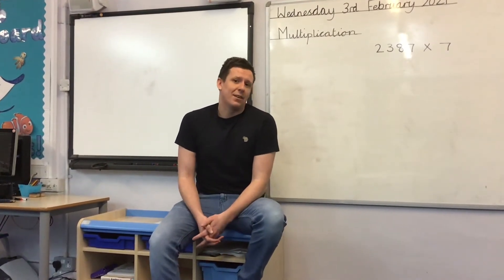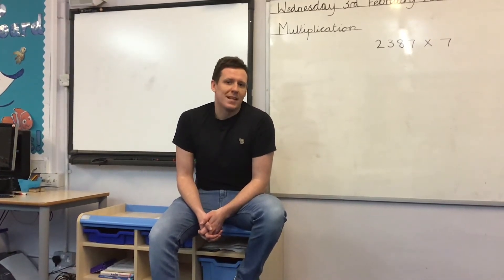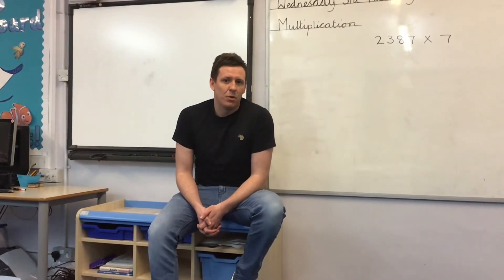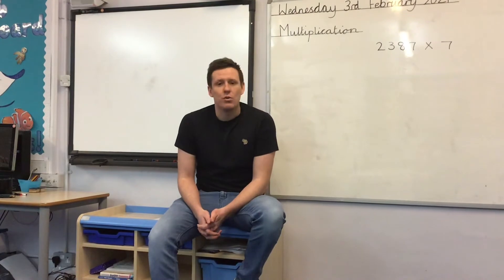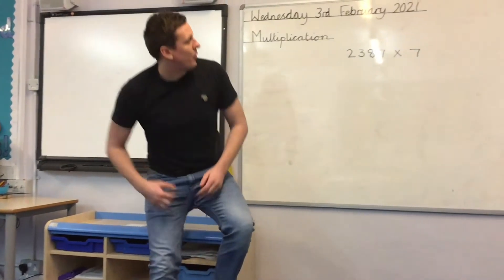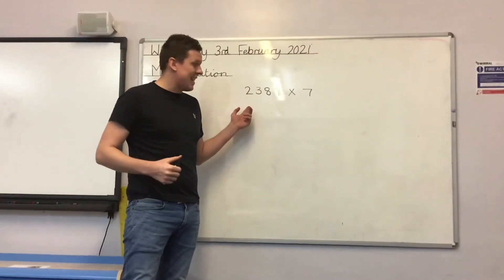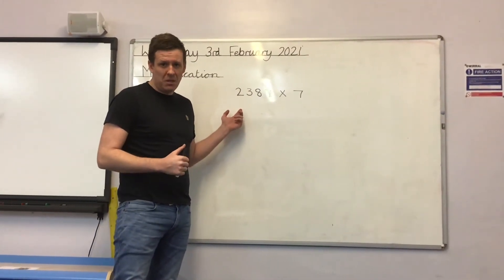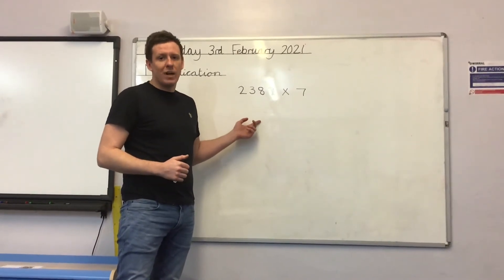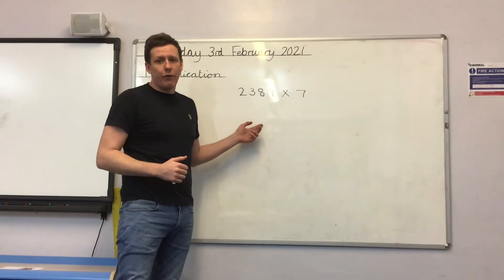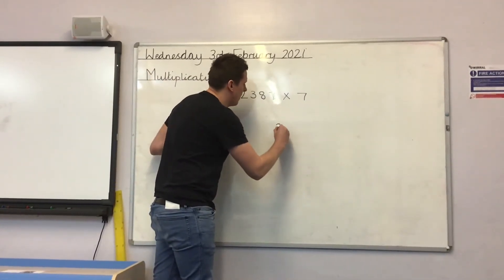In maths today, we'll be carrying on our work on multiplication. But unlike yesterday where you looked at how you can use known facts to multiply and divide mentally, today you will have to use the formal written method. So for example, if you have the question 2,387 times 7, that would be very difficult to complete mentally, Year 5. It's best to write it down in one of the formal written methods — perhaps the easiest method is the column method.